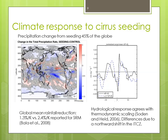Looking at zonal mean changes in precipitation minus evaporation, we compared what we modeled to the classical thermodynamic scaling by Soder-Nehel. Most of the changes can be explained by thermodynamics, but there's also a dynamics component explained by a shift in the ITCZ because there's more cooling in the southern hemisphere. Southern hemisphere surface clouds are more susceptible in the first place, and there's more of a sea ice feedback in the southern hemisphere — that's where the hemispheric asymmetry comes from.